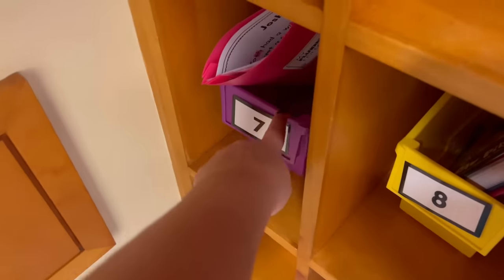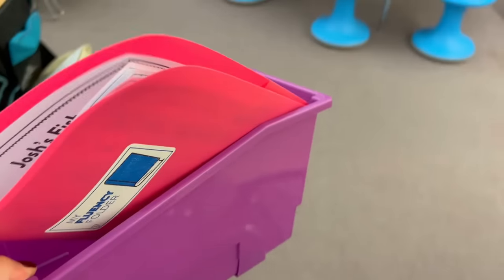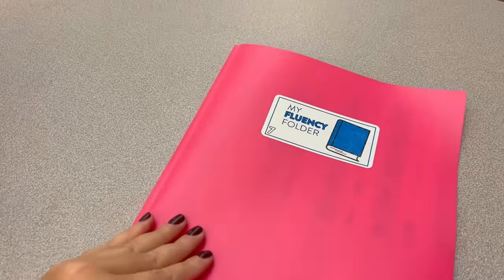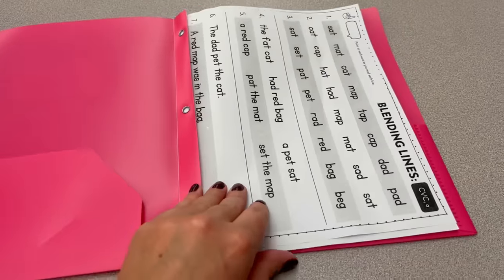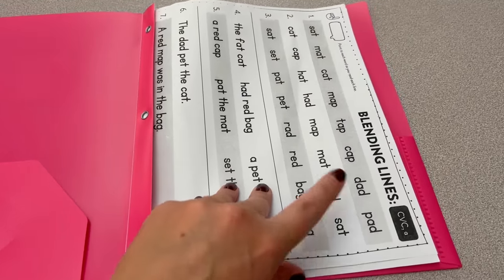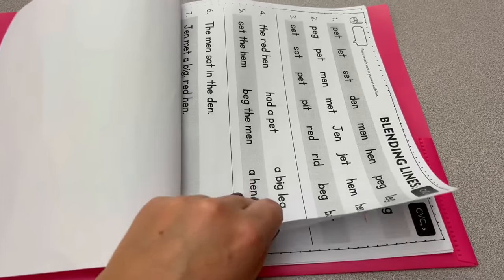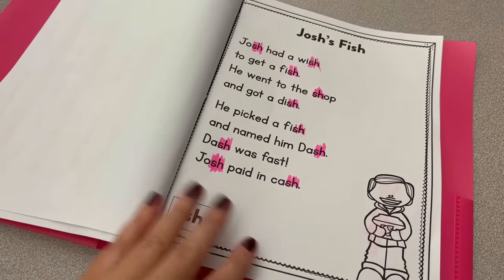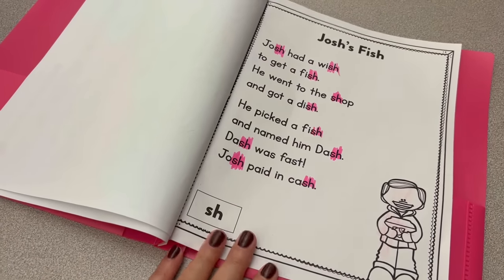As soon as students see their name on the board and know they're coming to me, they grab their book bin and come right to the table and start reading their fluency folder right away. I like this because they have a routine — they're doing something as soon as they get back to the table and they're not just waiting for me to start instruction. In their fluency folder they all have different things: blending lines for CVC with the letter A, CVC E, CVC O. They have a little witch finger they can use to read all the words quickly and accurately. We also just added our first decodable poem, Josh's Fish — yesterday we highlighted all the SH words and read it through once.